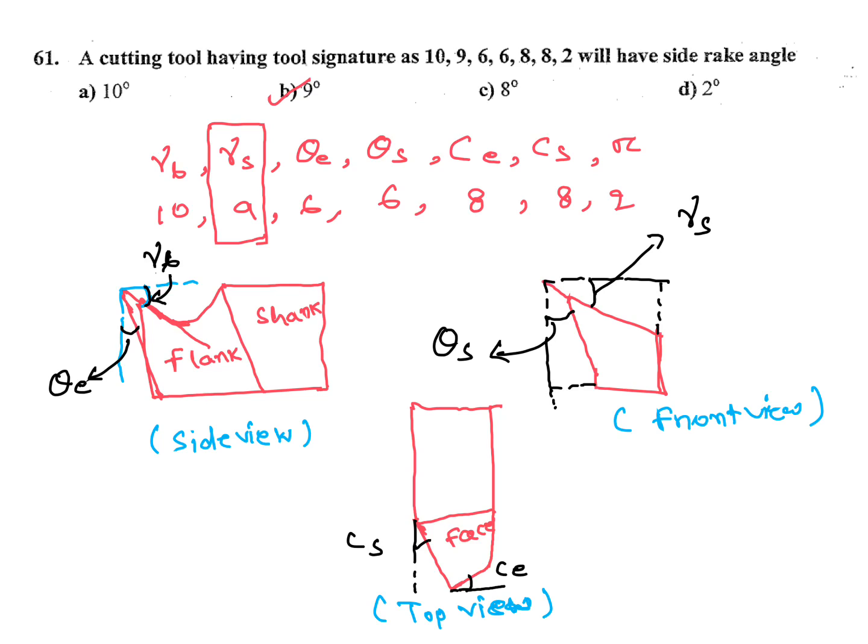You can omit that one, that nose radius part, last one. Sometimes they won't give, if option is six then you have to, seven is not available, then you have to go for six. If seven is available then you have to go for seven.